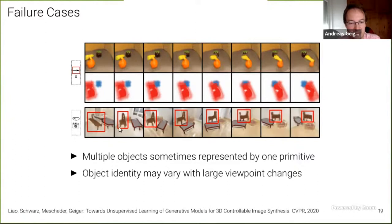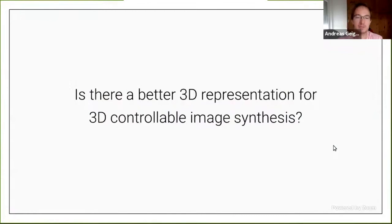Here are some failure cases on the most challenging datasets — the fruit and flying furniture sets. In one case, moving an object in 3D causes two objects to move simultaneously and slightly change shape, meaning multiple objects were represented by the same primitive. Also, rotating the camera causes a bench shape to change into a chair shape, showing some entanglement of object identities.